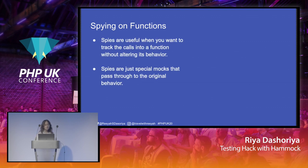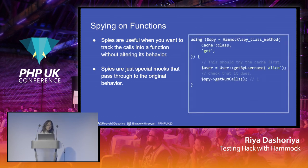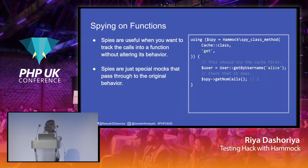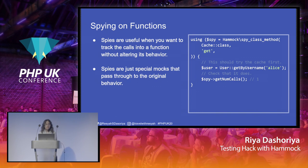Spies are useful when you are trying to track calls into a function without affecting its behavior. It's a special case of mock in which you can just pass through the original behavior. There are different kinds of spies: object method spy, class method spy, and global function spy. When you use spy_class_method, in this example you are spying on the Cache class. Under the scope of that method, when you call get_by_username, you expect it to go to cache first; only if there's no cache should it go to the database. You then call get_num_calls to find out if that specific class was ever called.